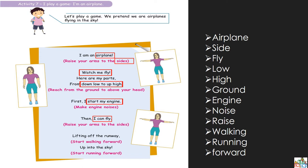Ensuite allons voir — lifting off the runway. Lifting off the runway veut dire que vous allez start walking forward. Vous ne pouvez pas rester en place — vous allez bouger, vous allez marcher. Because an airplane — avez-vous déjà vu un airplane démarrer? It starts down, and then it starts to move, and then it starts to go up. So you're going to start walking first.